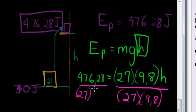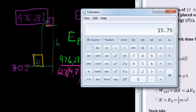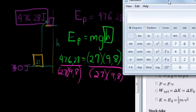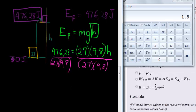What do we get? Let's see. Sorry for the ugly writing. Can you read? Sure you can. 476.28 divided by 27 and also divided by 9.8. What do we get? Oh, 1.8. Lovely answer. My height is 1.8 meters. Excellent.